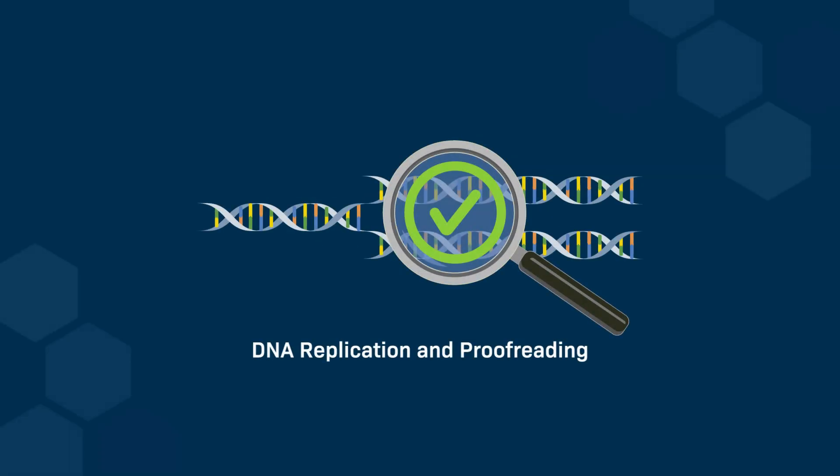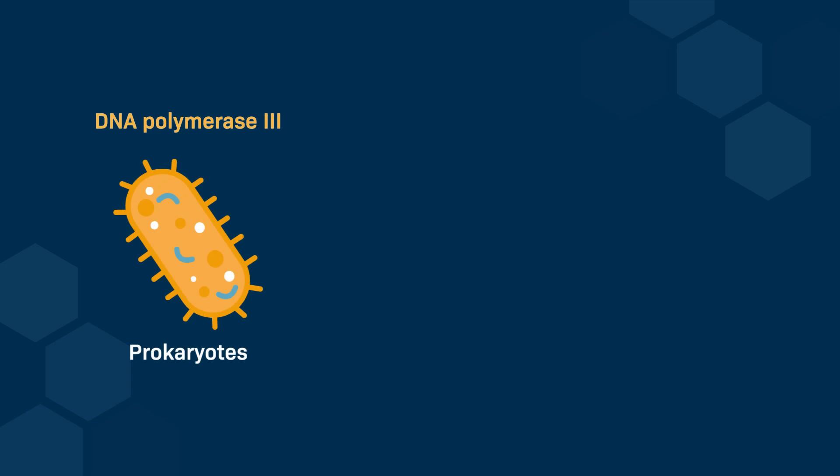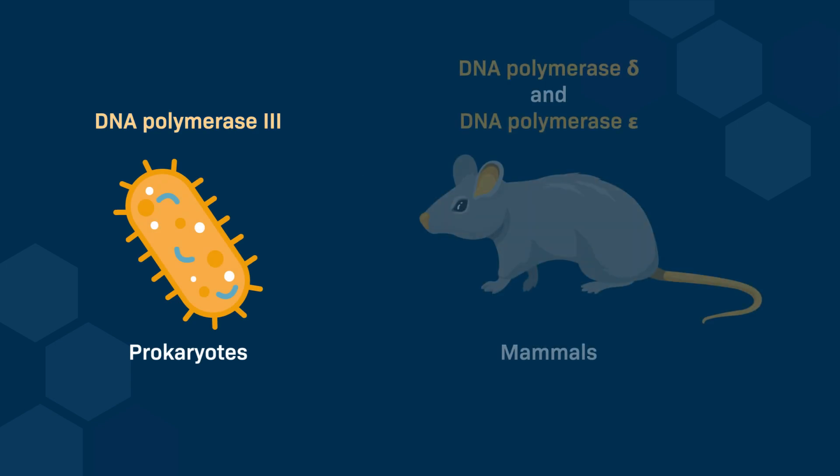In this video, we will explore the role of DNA polymerases, which are known as DNA polymerase 3 in bacteria and as DNA polymerases delta and epsilon in mammals.